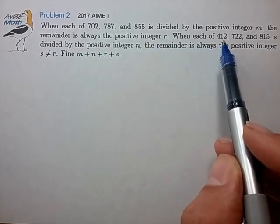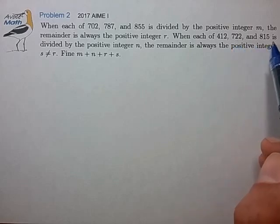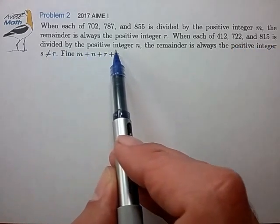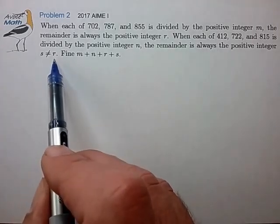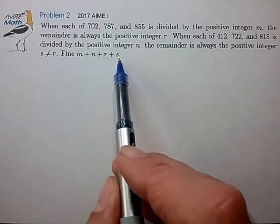When each of 412, 722, and 815 is divided by the positive integer n, the remainder is always the positive integer s not equal to r. Find the sum m plus n plus r plus s.